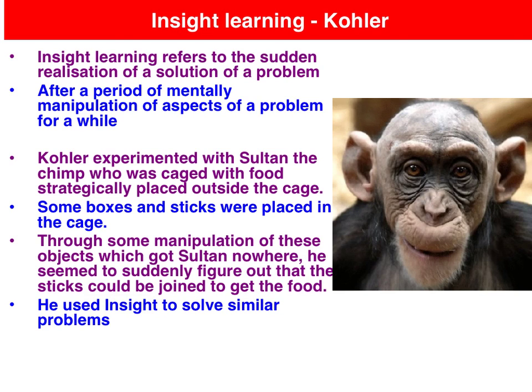Insight learning refers to the sudden solution of a problem after a period of mental manipulation. Köhler did a number of experiments with chimps, most famously Sultan with a stick experiment, in which food was placed just outside of reach of a cage in which Sultan was in, and Sultan had a variety of tools that he could use to obtain the bananas, including sticks in a box.